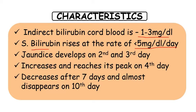In physiological jaundice, jaundice develops on the second and third day and reaches its peak value on the fourth day of birth. It decreases after seven days and disappears by the tenth day of birth. This is the proper characteristic of physiological jaundice. Remember, it is always cephalocaudal in fashion.